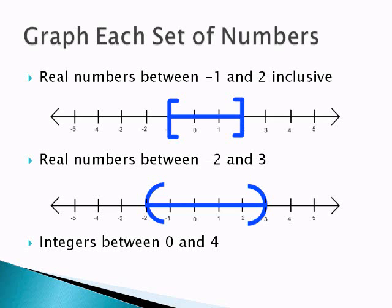The last thing I want to touch on is problems like this, integers between 0 and 4. Now integers do not include fractions. So instead we're going to have just points, and it's not inclusive, so just between 0 and 4, we're going to have points at 1, 2, and 3.